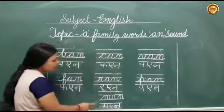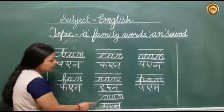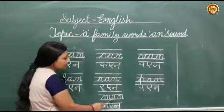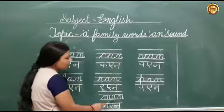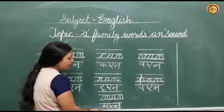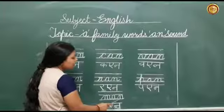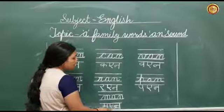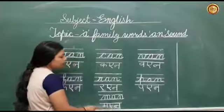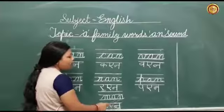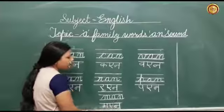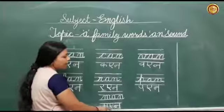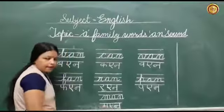This is letter M. The sound of M is 'muh'. This is letter A. The sound of A is 'A'. This is letter N. The sound of N is 'N'. So we can read it like this: muh, A, N — MAN. muh, A, N — MAN.